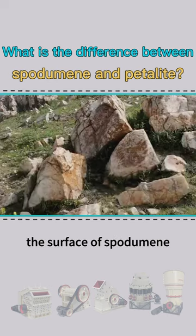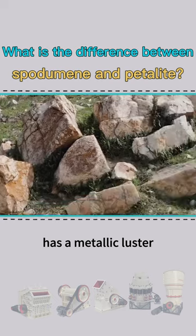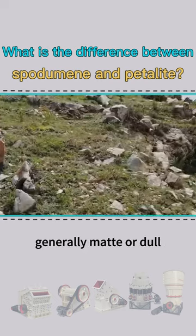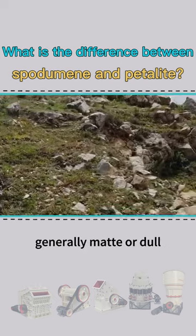In addition, the surface of spodumene has a metallic luster, and lithium feldspar is generally matte or dull.